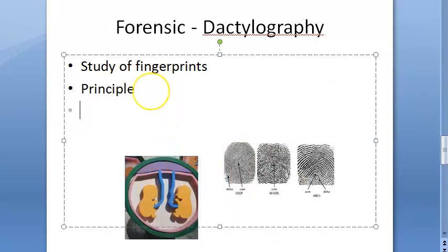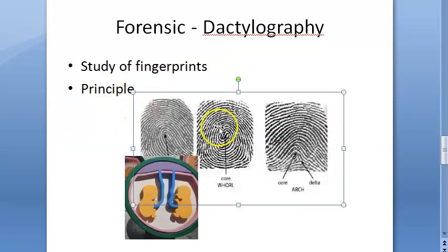For recording fingerprints, you can use printer's ink on unglazed white paper. For routine legal records, the left thumb is usually used. For complete legal records, all ten fingers are taken. Computerized fingerprint readers are also available nowadays, typically scanning eight digits. At crime scenes, fingerprints are used in a specific way.